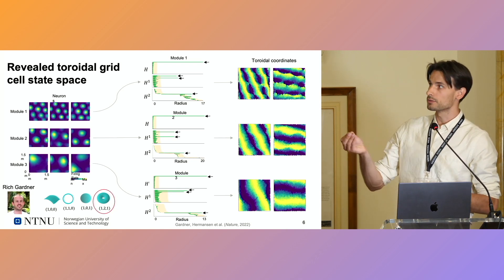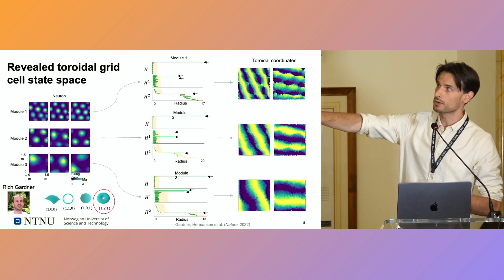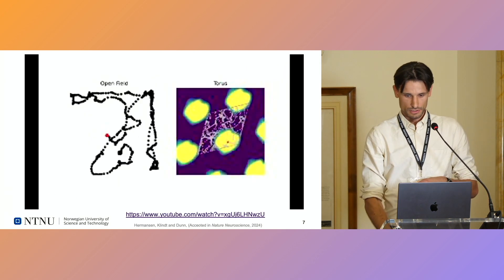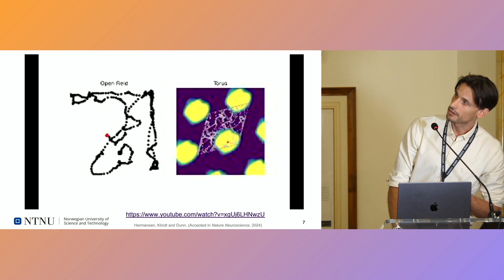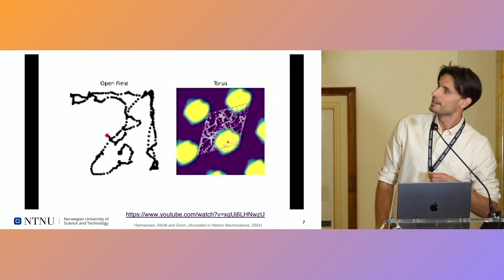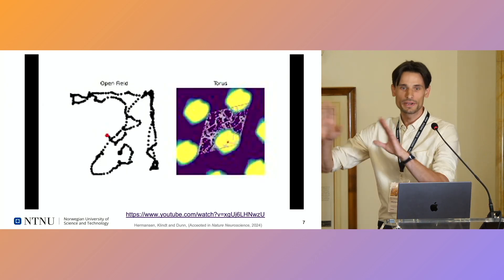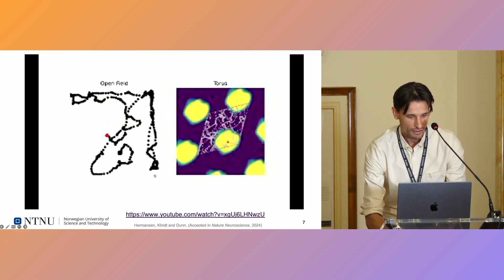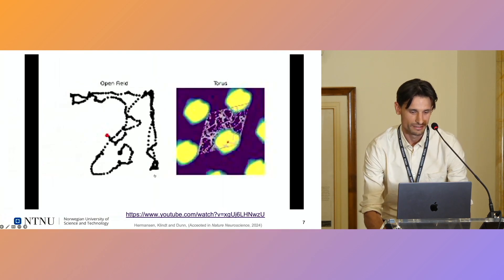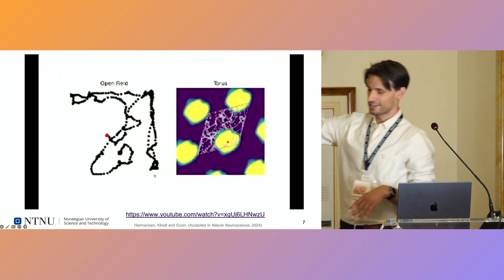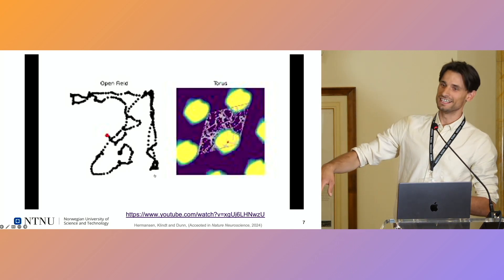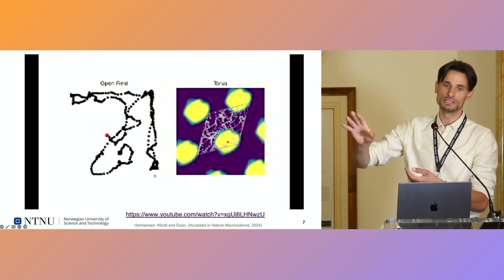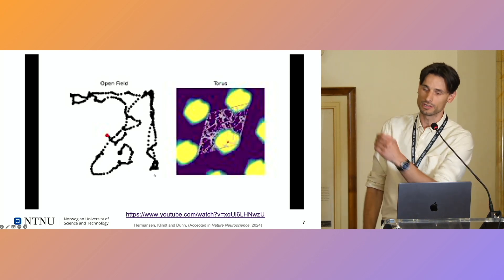Furthermore, we can get a toroidal parametrization and compare that with the spatial movement of the animal. You can imagine that the internal representation moves in alignment with the spatial trajectory, which is recorded on the left.